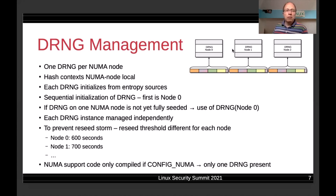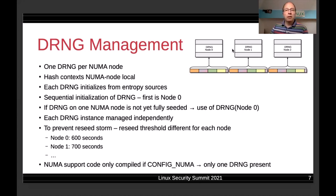To prevent a reseed storm, since all DRNGs are managed independently, the timer-based reseed thresholds are different for each DRNG. NUMA node 0 retains the 10-minute threshold, NUMA node 1 has 700 seconds, NUMA node 2 has 800 seconds, and so on. This entire code is only present if NUMA support is compiled for the kernel.